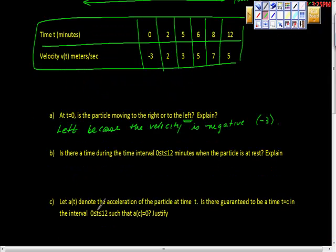Then the second question is, is there a time during the interval 0 to 12? Well, this should be seconds, shouldn't it? So 0 to 12 seconds, when the particle is at rest. Well, look, we know that this function is continuous and differentiable, and it goes from negative 3 to a positive number. It doesn't matter what positive number it goes to. It goes from negative 3 to 5. Well, to go from negative 3 to 5, it would have had to have crossed a velocity of 0. So the answer is yes.